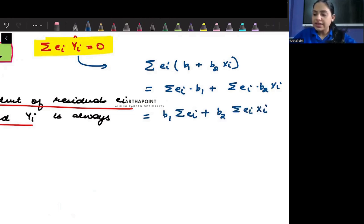Now we know that we have already proved in one of these videos that summation ei Xi is zero.